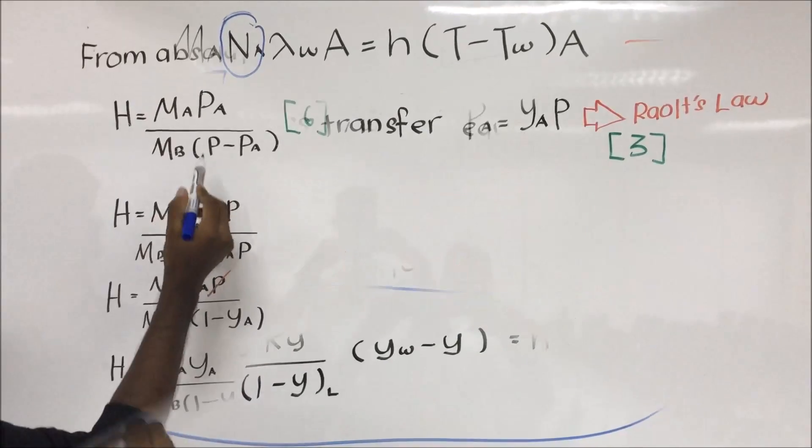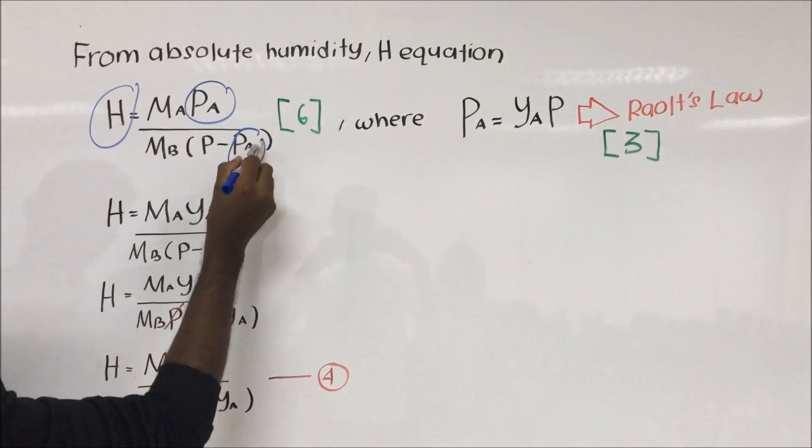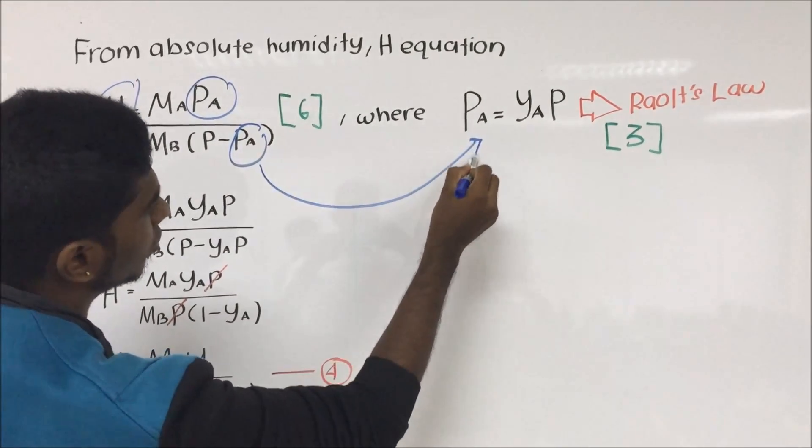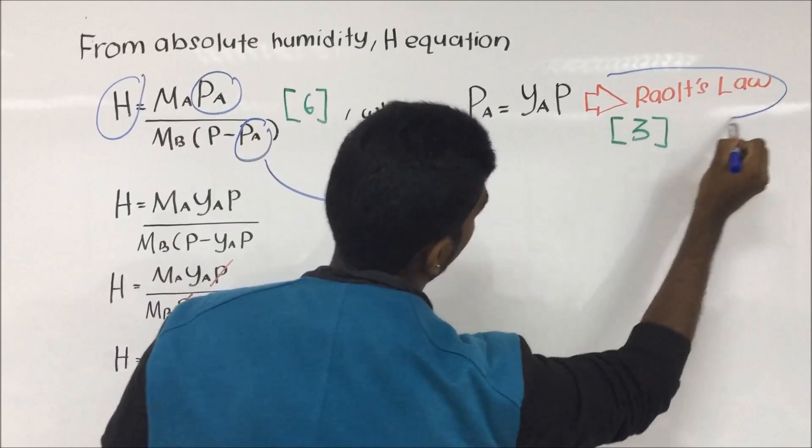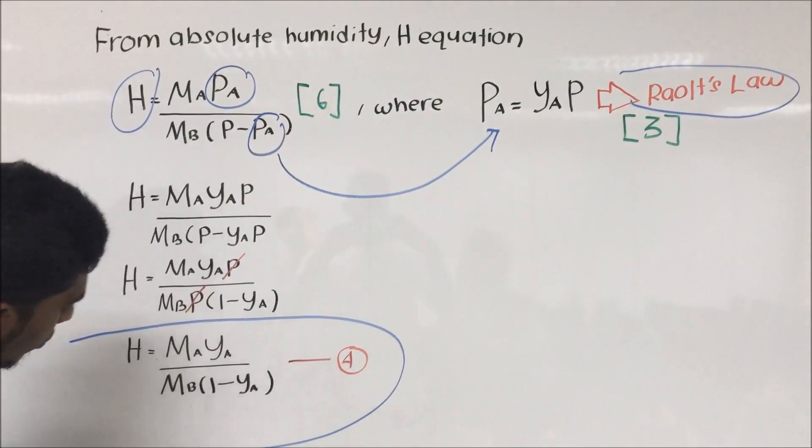From the absolute humidity equation, humidity is the function of the partial pressure, where the partial pressure is equal to Y times P. We get this equation from Raoult's law. Then we simplify and we will get the humidity equation.